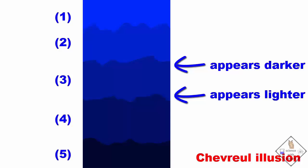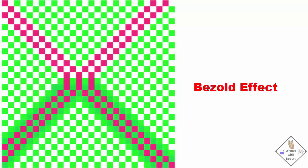The squares look pink and red even though they are the same. This is the Bezold effect, when colors appear different due to adjacent colors.